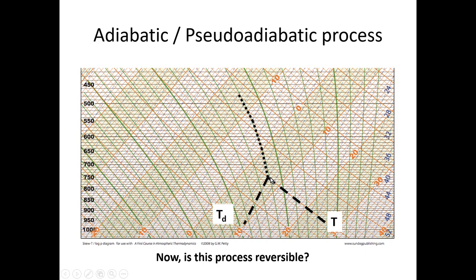Now, if that cumulus cloud has air that's still warmer than the surrounding air, it's going to continue to rise, following the saturated adiabatic lapse rate. Notice it's no longer cooling at the dry adiabatic lapse rate — it's got that latent heat — so it follows this green line. When it condenses, it's not cooling off quite as fast as it was when it was dry. So now we know how to calculate what cloud base is.